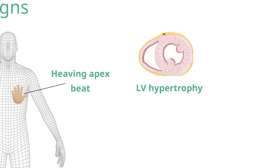LV hypertrophy occurs because over time the myocardium thickens in order to produce a greater force of contraction in systole to overcome the increased afterload in aortic stenosis.